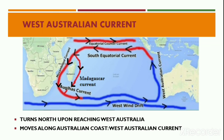Upon reaching the southwest coast of Australia, the currents get deflected northward as a result of the Coriolis force and the shape of the coastline. These cold currents move along the west coast of Australia and are termed the West Australian Current. They continue along the coast until joining with the South Equatorial Current, completing the gyre system of the southern Indian Ocean.